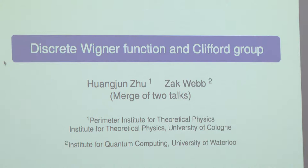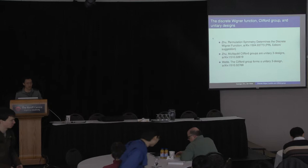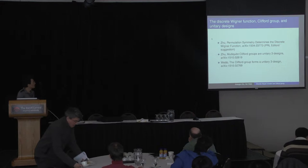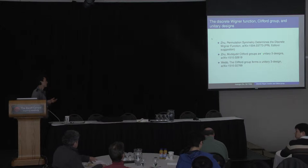First, I would like to thank the organizer for giving me the opportunity to present this work. This is the work of SecWeb at RQC. This is a talk about three papers — two papers of mine. The first one is about discrete Wigner function and permutation symmetry, and the second one is about the multi-qubit Clifford group as a unitary 3-design.